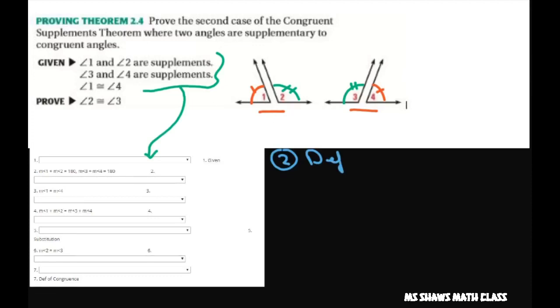Basically, the measure of these two angles when you add them together equals 180. When you add these two together, you get 180. So that's just the definition of supplementary angles.